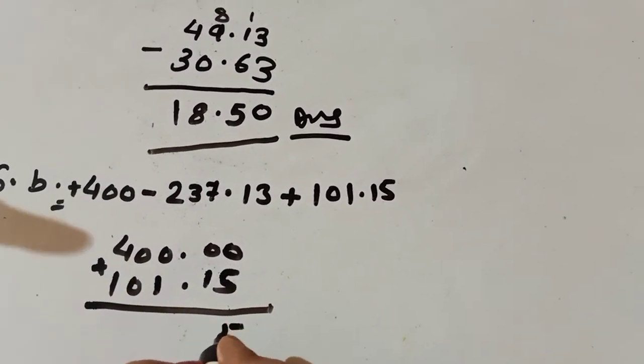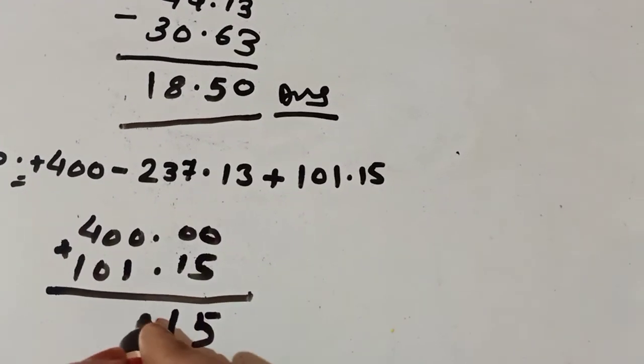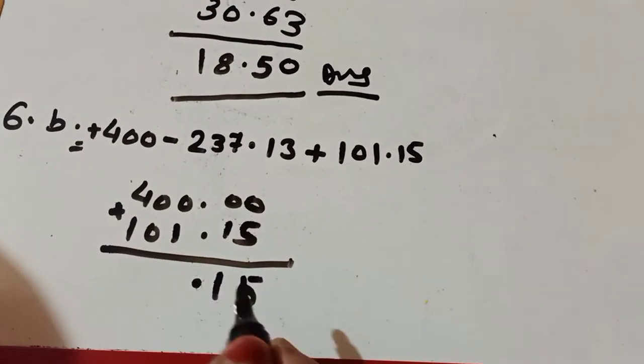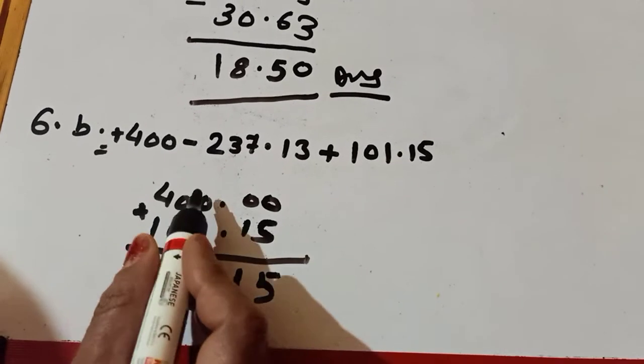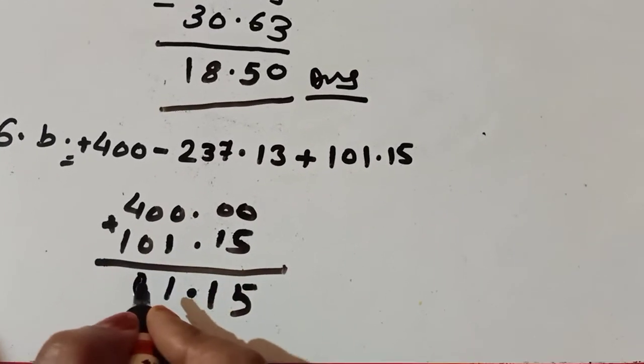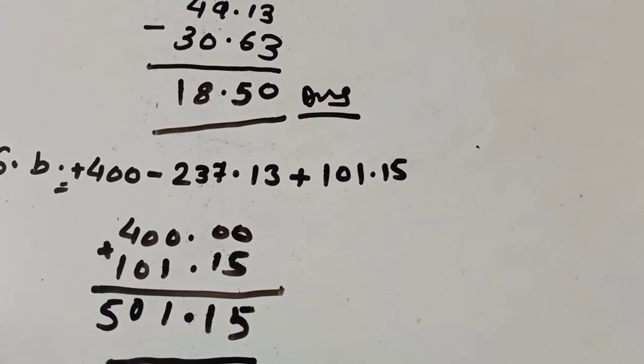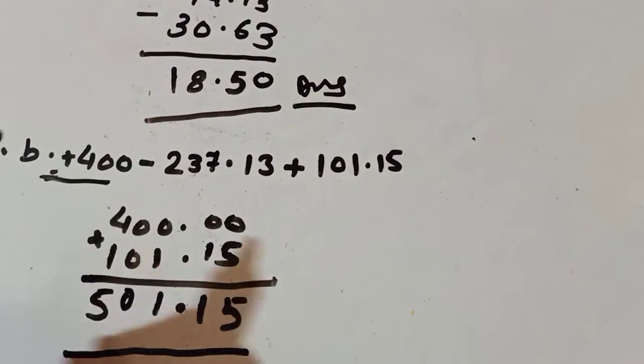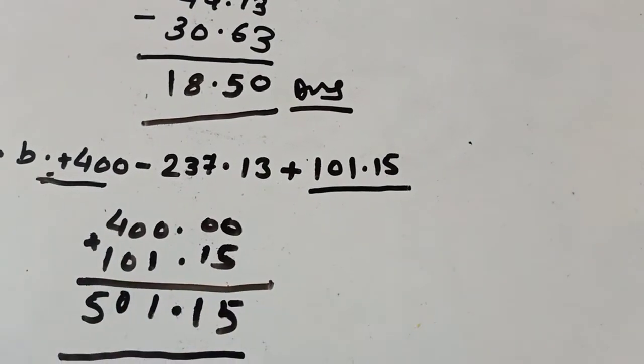And after that we add it. 0 plus 5 is equal to 5. 1 plus 0 is equal to 1. After that we put the sign of point. And after that again you start adding. 1 plus 0 is equal to 1. 0 plus 0 is equal to 0. And 4 plus 1 is equal to 5. You see the question, 400 and 115 we added.